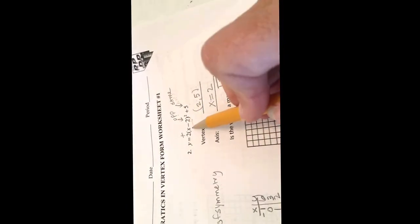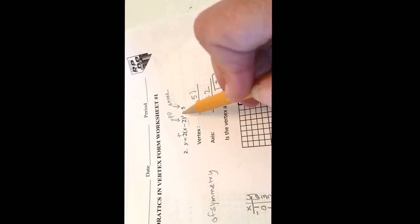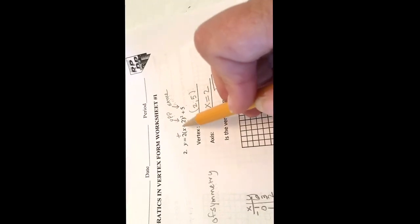So when I plug in 0, 0 minus 2 is negative 2. Negative 2 squared is 4 times 2 is 8 plus 5 is 13. So we're up here at 13. When I plug in 1, 1 minus 2 is negative 1. Negative 1 squared is 1 times 2 is 2 plus 5 is 7.